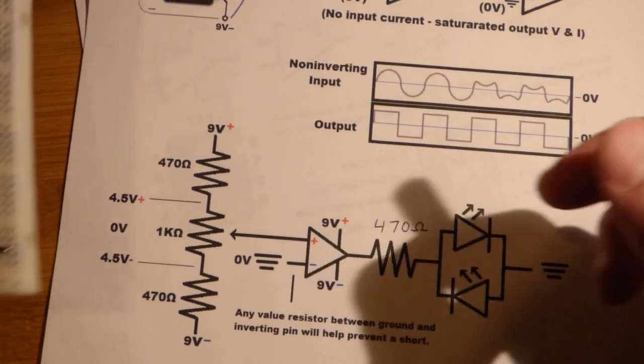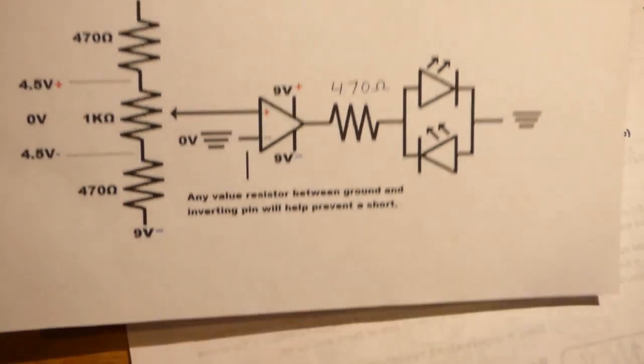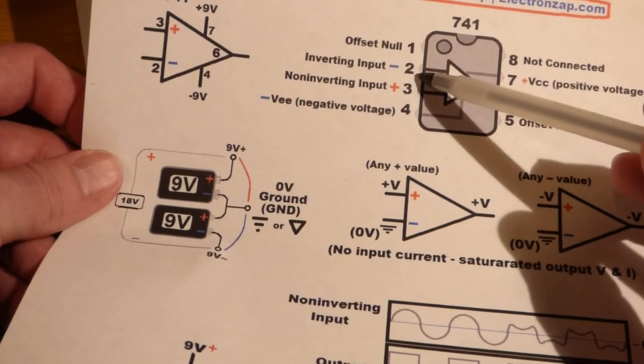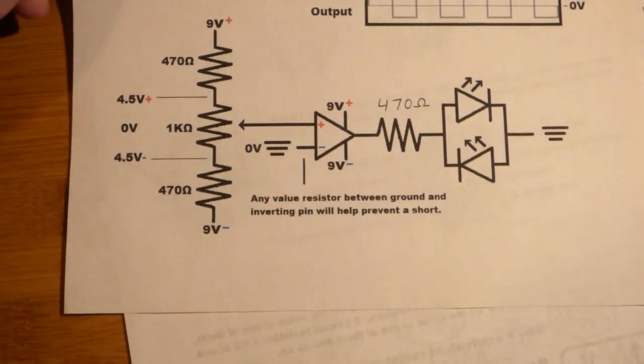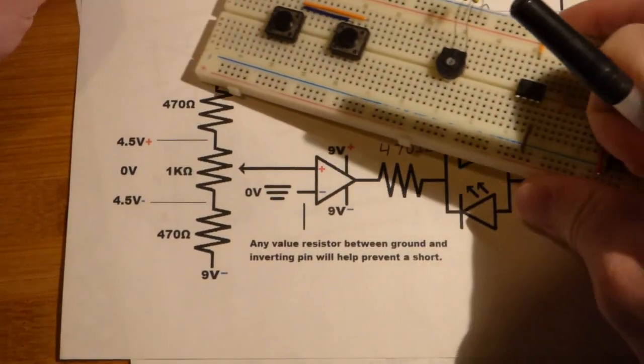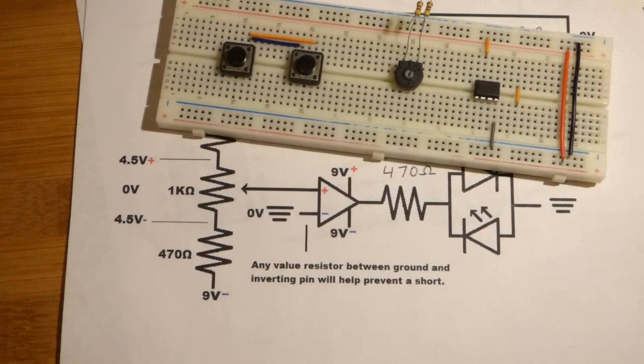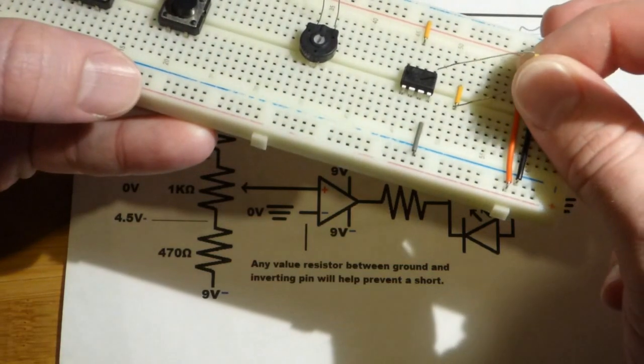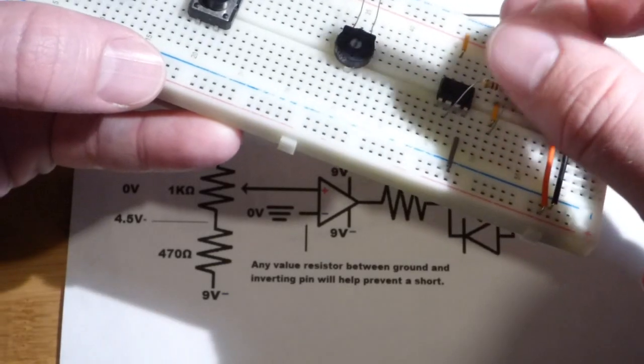The inverting pin, that one is pin number 2. We're going to ground pin number 2. I'm actually going to do that with a 470 ohm resistor because this jumper right here is going to be ground. We're going to go to pin number 2, the second pin up.